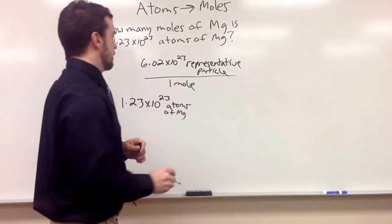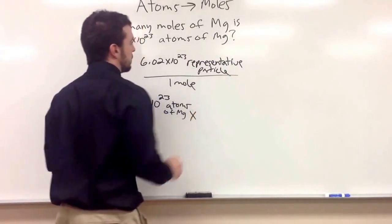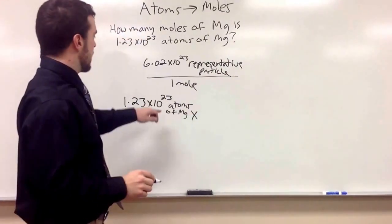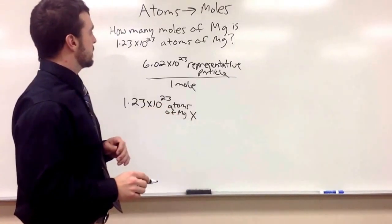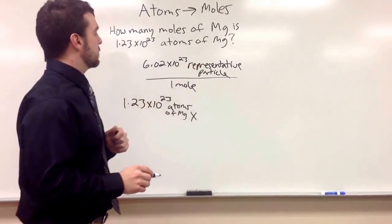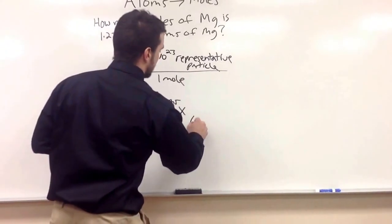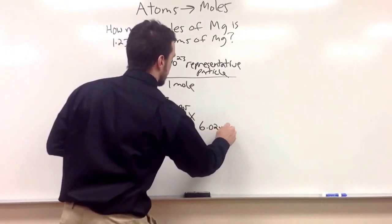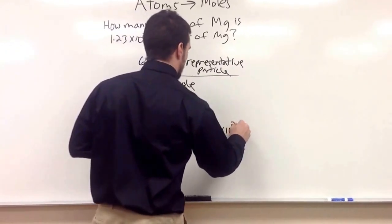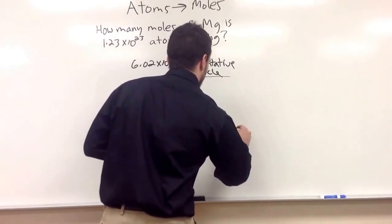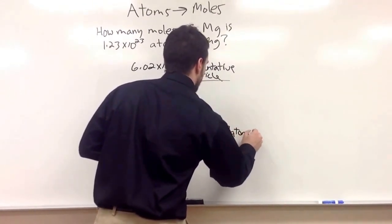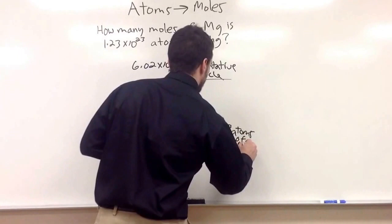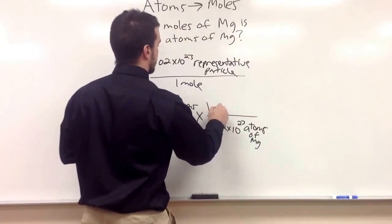Make sure to label everything. Multiply by our conversion factor. Don't forget we have to have atoms of magnesium cancel out. So our representative particle could be atoms of magnesium, so put 6.02 times 10 to the 23rd atoms of magnesium per one mole of magnesium.